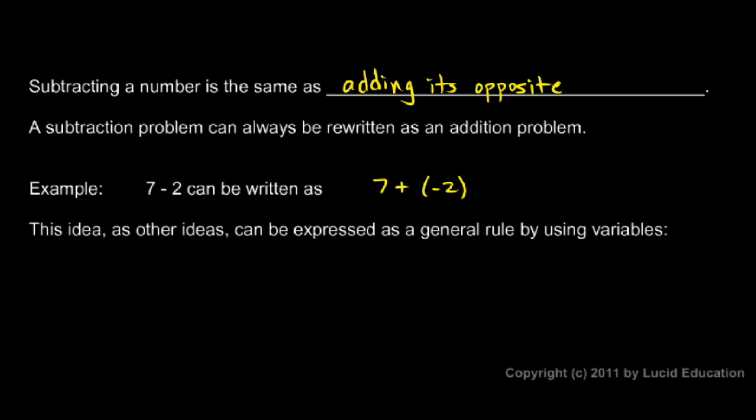This idea can be expressed as a general rule, not just this specific case, but as a general rule using variables. We can say a minus b is always equal to a plus negative b. You could read this as a plus the opposite of b, but it's more commonly read as a plus negative b.